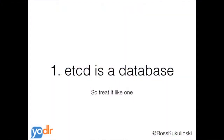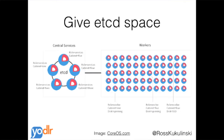Number one: etcd is a database, and you need to treat it like one. You need to give it some space. If you've got a Mongo cluster, Redis cluster, or Postgres, you wouldn't run hundreds of containers of your actual application on the same host as your database. You want your database to live in its own little world, give it its own protected space — and you really need to do the same thing with etcd specifically.